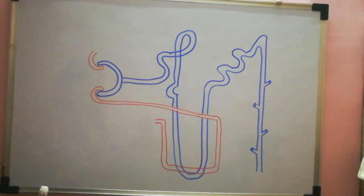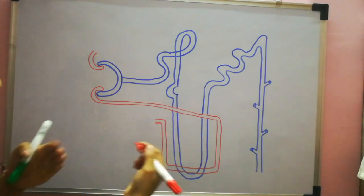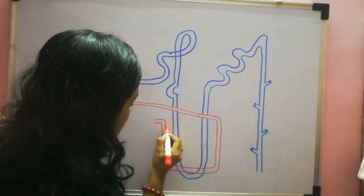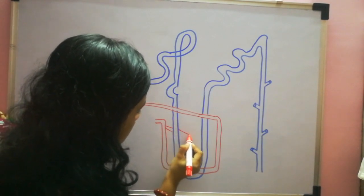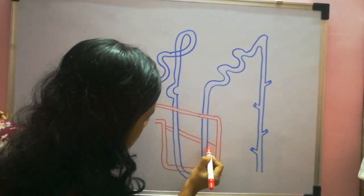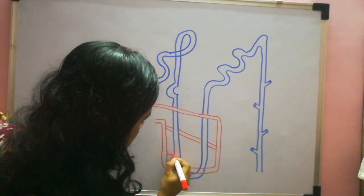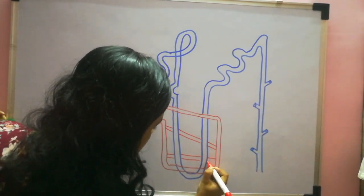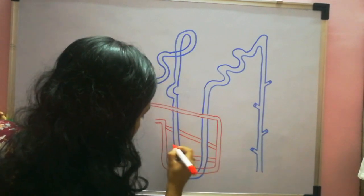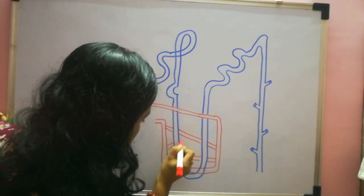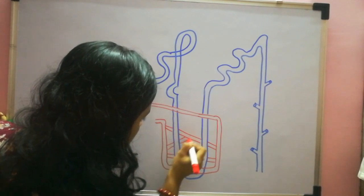Now what you have to do is make the branches of capillaries. You can make lines like branches of capillaries — like this, then here one more, then cross. You can show it like this, something cross here.